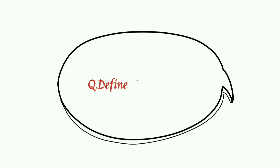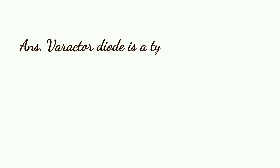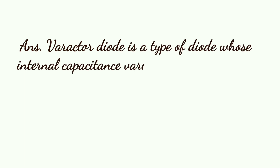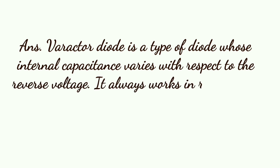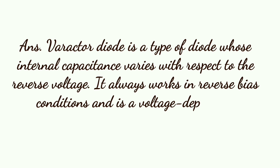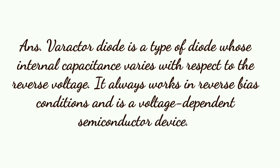Define Varactor Diode. Varactor Diode is a type of diode whose internal capacitance varies with respect to the reverse voltage. It always works in reverse-bias condition and is a voltage-dependent semiconductor device.